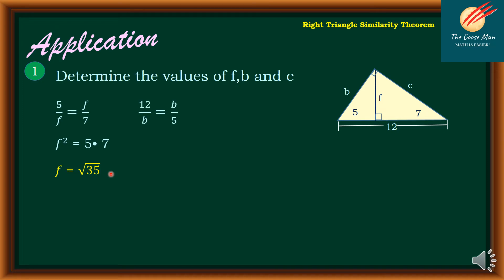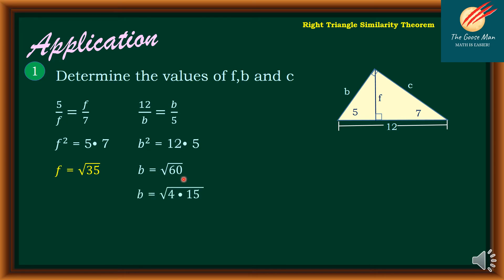Next, to find the value of B, B is the geometric mean between 12 and 5. So B squared equals 12 times 5, which equals 60. Taking the square root of both sides, B equals the square root of 60. Since 60 can be factored as 4 times 15, B equals 2 square root of 15.